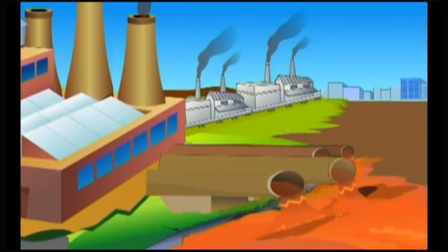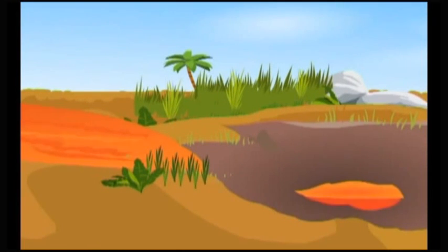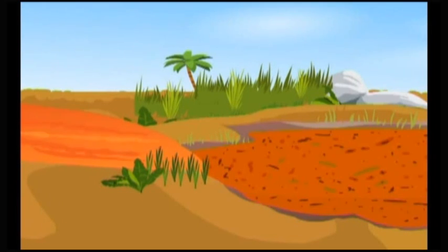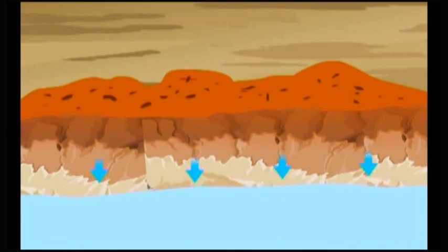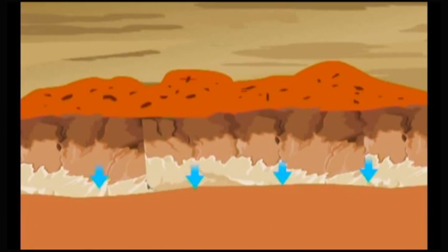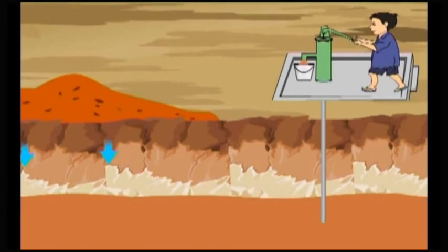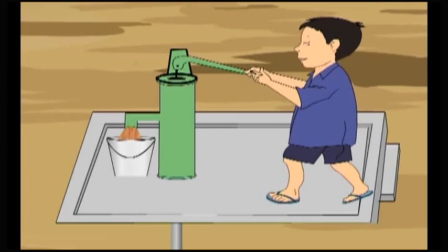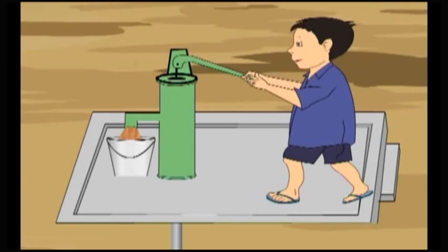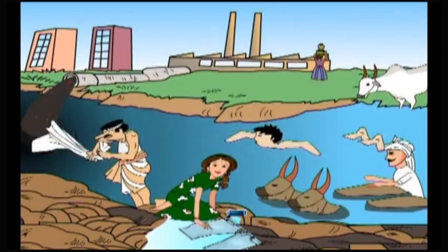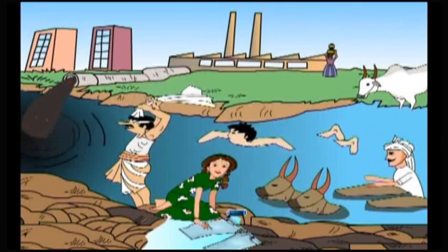Industries located far away from water bodies release the effluents into the surrounding land or into pits. The effluent water along with its chemicals percolates into soil and contaminates groundwater. As a result, the water in the wells surrounding the industry is contaminated and becomes unfit for drinking, washing and for plant growth. Contaminated groundwater kills the plants either immediately or slowly, and the entire land becomes unfit for human use. It is very difficult to remove the pollutants from groundwater.